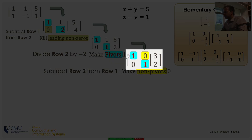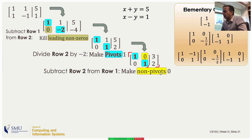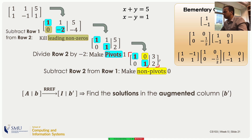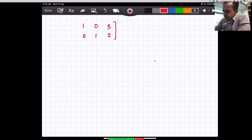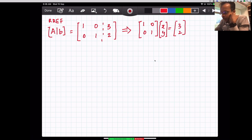After Gauss-Jordan elimination, the coefficient part is the identity matrix. The objective of Gauss-Jordan elimination is to reduce the coefficient part to the identity matrix, or get as close as possible. When achieved, the augmented matrix becomes the identity matrix augmented by some constants. This output is called the reduced row echelon form (RREF). It is equivalent to writing the identity matrix times the x vector equals the augmented column.